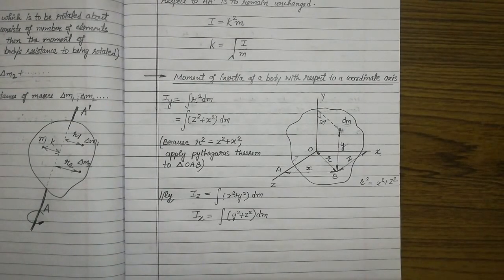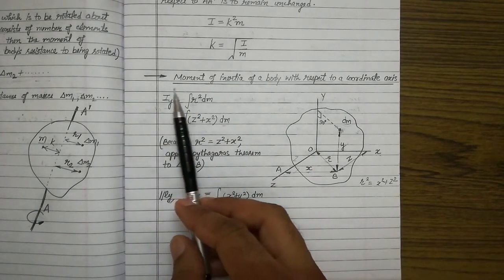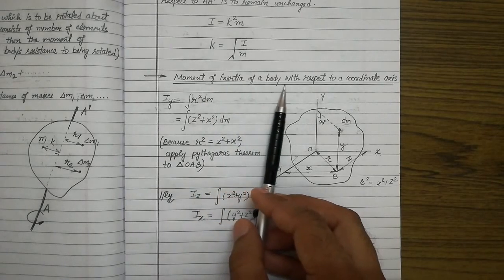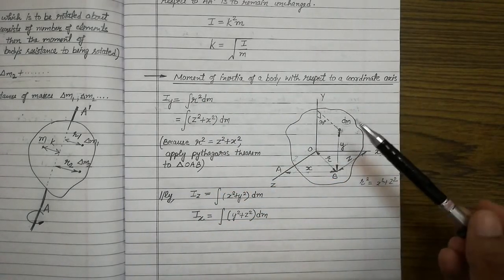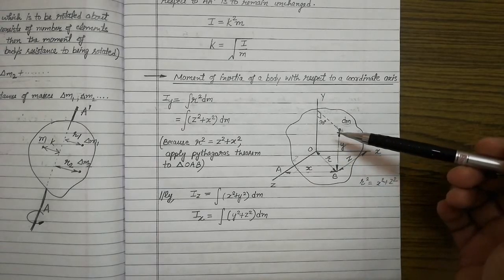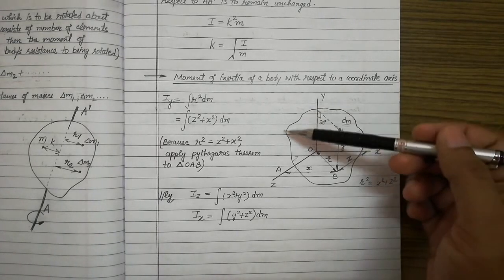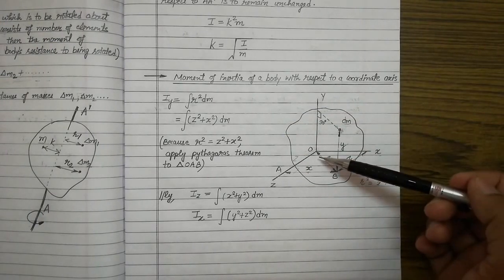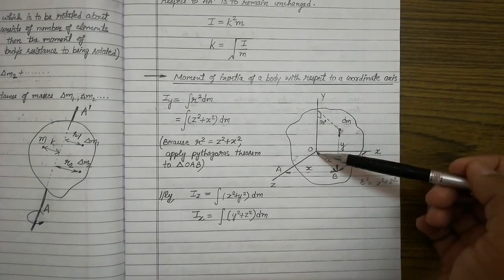Hello students. In the last video we discussed radius of gyration, and now in this video we will discuss another simple topic: the moment of inertia of a body with respect to a coordinate axis. In this topic we will learn what will be the moment of inertia of any particular body along different coordinate axes.